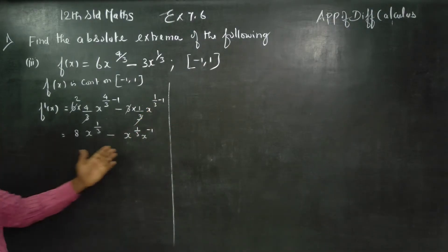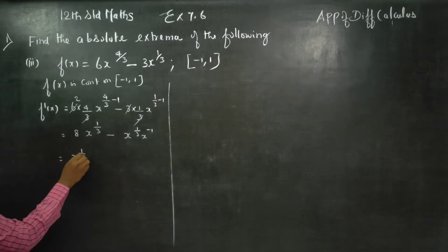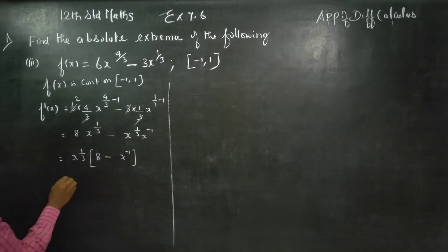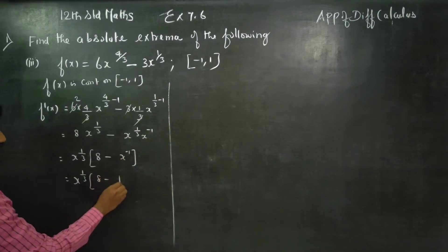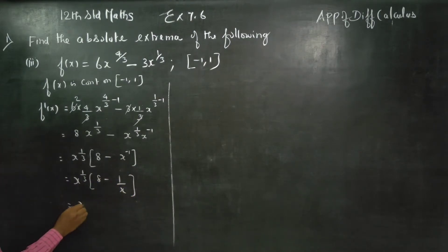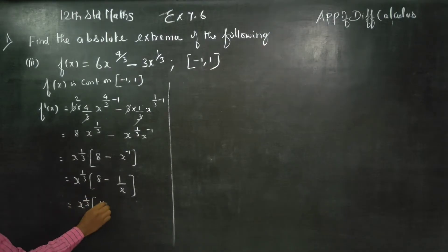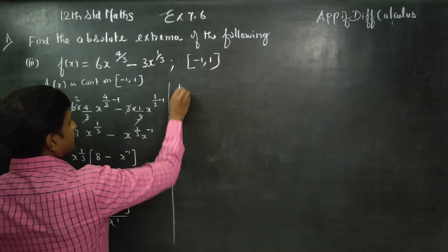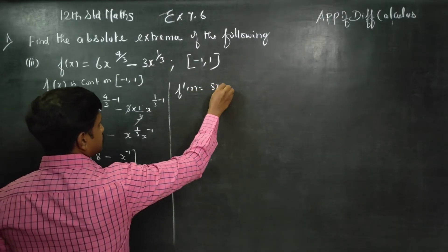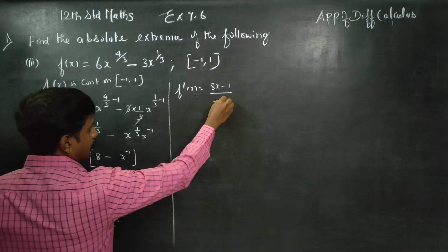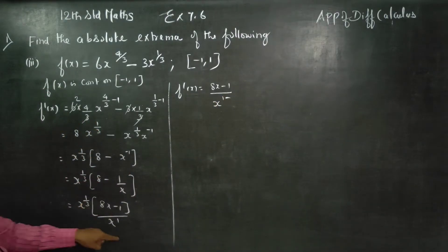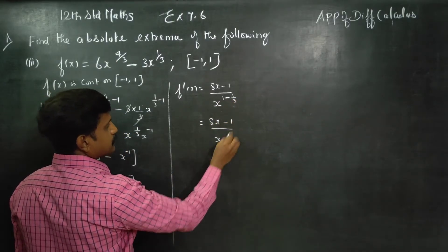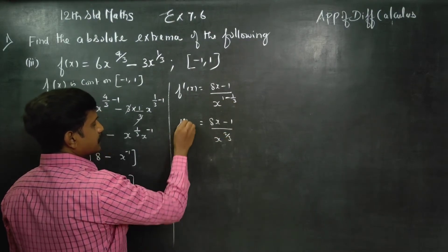Separating and taking x power (1/3) as common, the balance becomes 8 minus x power minus 1, which can be written as 1/x. After cross multiplication, f'(x) equals (8x - 1) divided by x power (1/3). That is our f'(x).